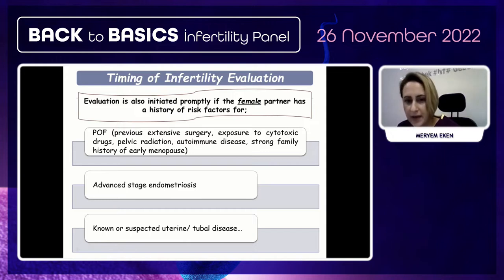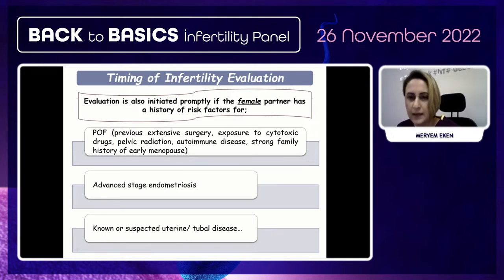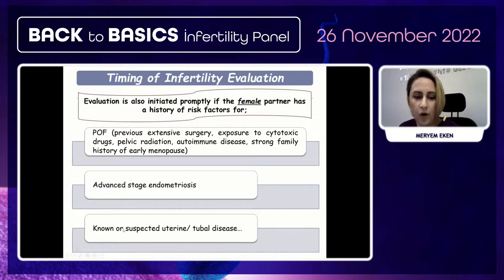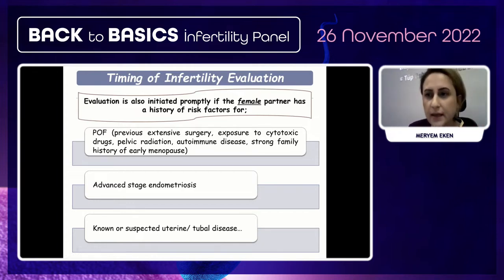Never wait in these patients. Getting a good medical history is the main factor. If the patient has previous extensive surgery, exposure to cytotoxic drugs, pelvic radiation, autoimmune disease, strong family history of early menopause, advanced stage of endometriosis, or known or suspected uterine disease, we never wait one or two years.